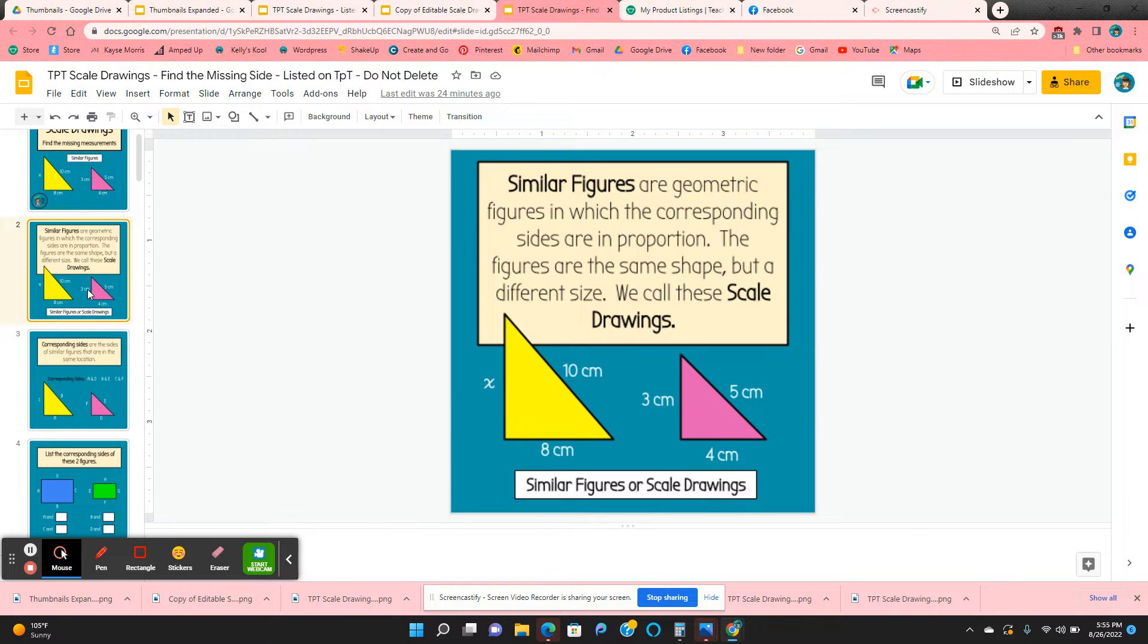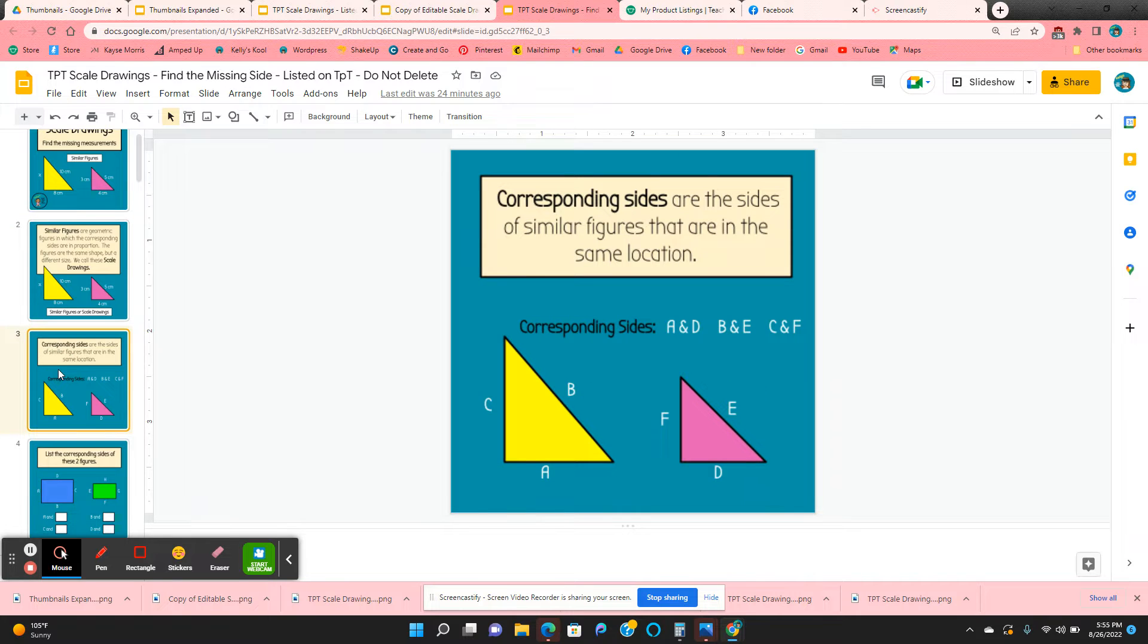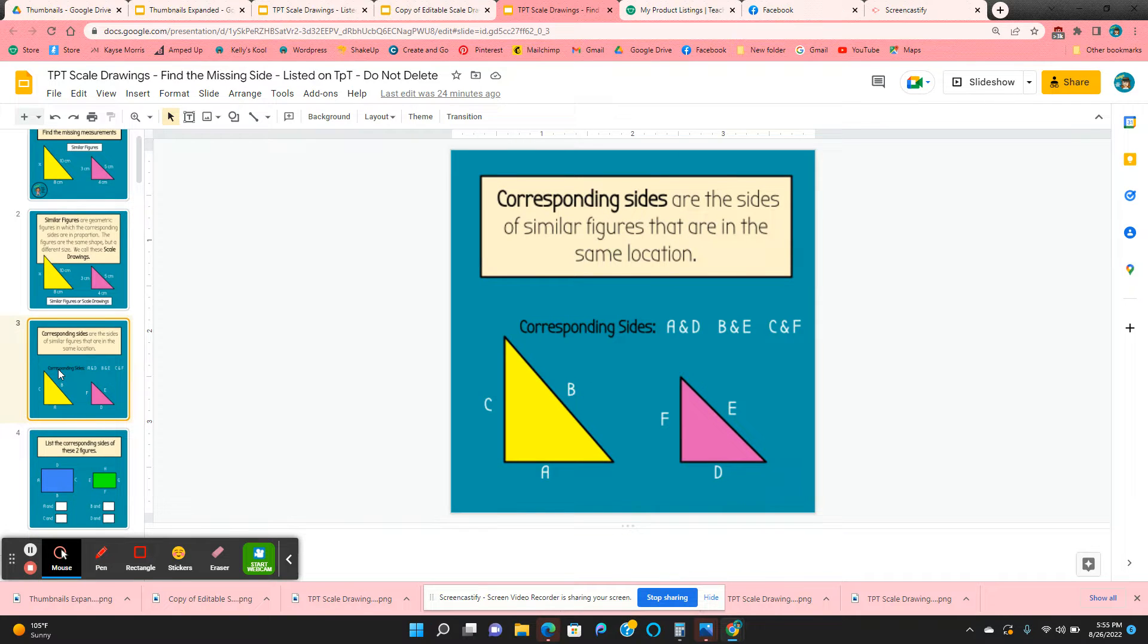This is only a seventh and eighth grade activity. It starts out explaining what similar figures are, scale drawings, that they are in proportion to each other, and then it gives them a definition of corresponding sides.